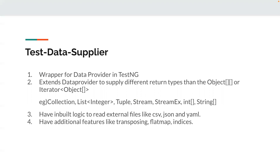Particularly in Selenium or REST Assured, you use a lot of JSON files — in REST Assured we often have to drive tests from JSON templates. In those cases, this library can come really handy. It also has additional features beyond what the standard data provider offers, such as transposing of the matrix, flat map, and indices. We'll discuss all these features in detail.